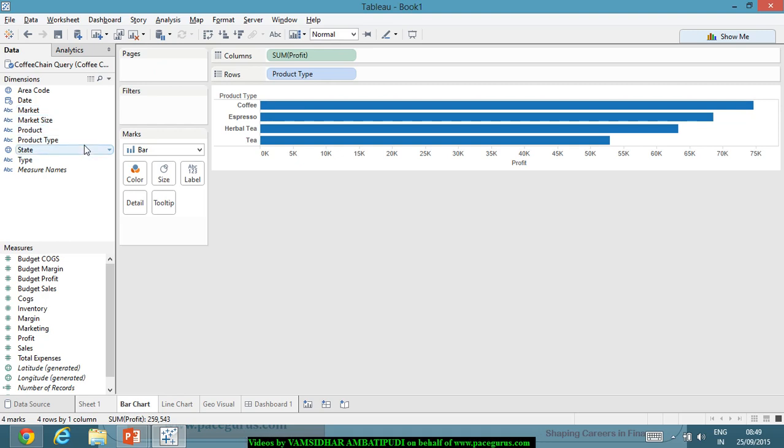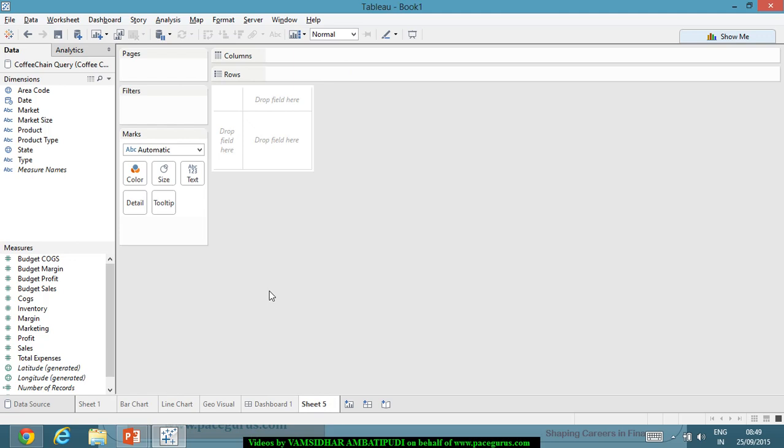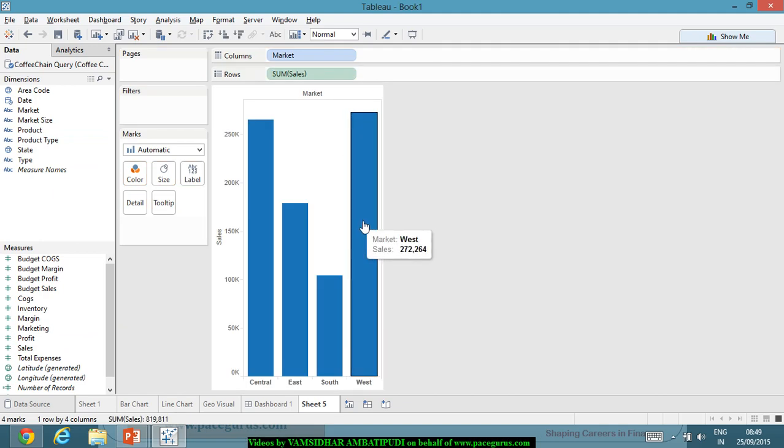If I have to quickly run through the whole process, let me create a new sheet. Let's say I have dragged the market into the columns and I have dragged the sales onto the rows. The market first of all is the dimension, so it is displayed as a discrete value shown in blue color.